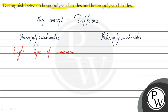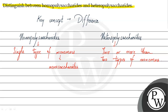Heteropolysaccharides have two or more than two types of monomers present. These monomers are monosaccharides. So in homopolysaccharides there is only one type of monosaccharide present, whereas in heteropolysaccharides there are multiple types of monosaccharide units present.